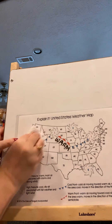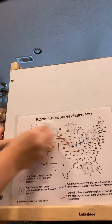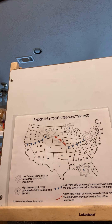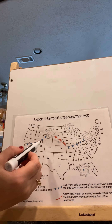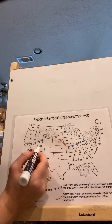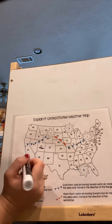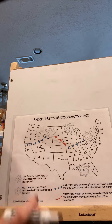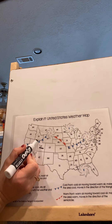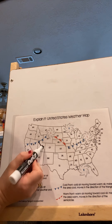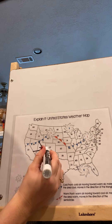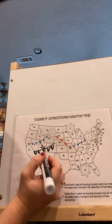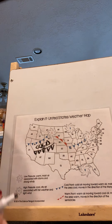Now let's practice. If I were to make a prediction for Utah — let's say this is today — what will the weather be like tomorrow? Well, I can see that a cold front is pointing in this direction, so it's very possible that by tomorrow that cold front will have passed by, which means it brought cold air with it. So I could predict that tomorrow the temperatures will decrease, or be colder.